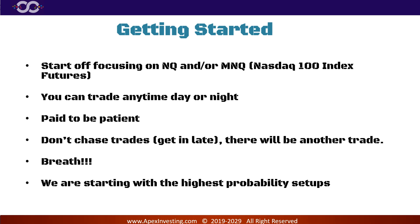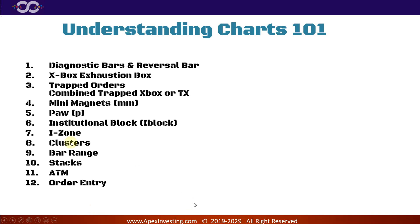We're starting your training with the highest probability setups — often 85 to 95% of the time these trades have been profitable in the past. Of course there's no promise of future performance, but we've seen this in volatile markets, flat markets, holiday markets, trending markets, and range-bound markets. Now let's make sure you understand our charts, because at first they can look really overwhelming — like you were looking at the Matrix.